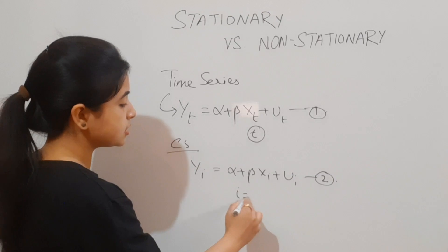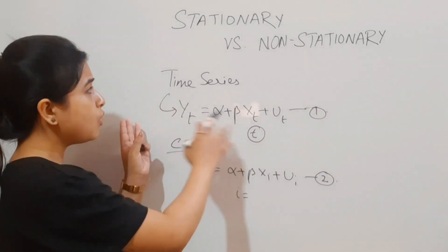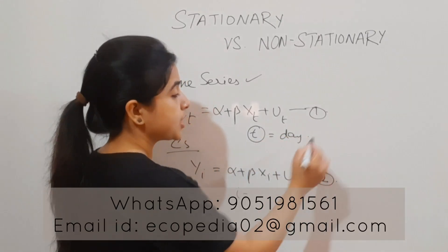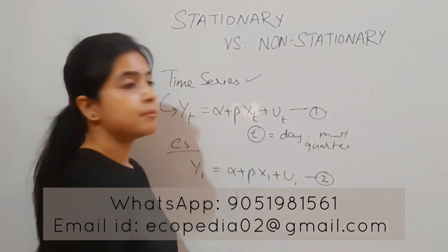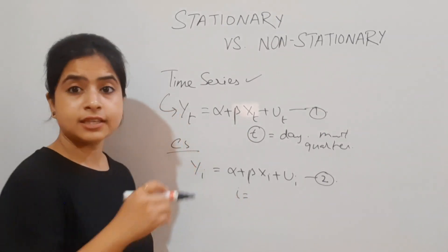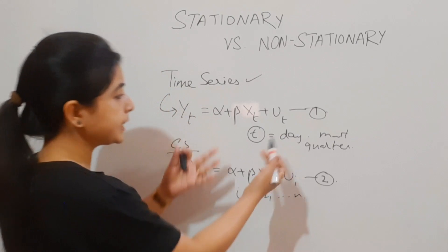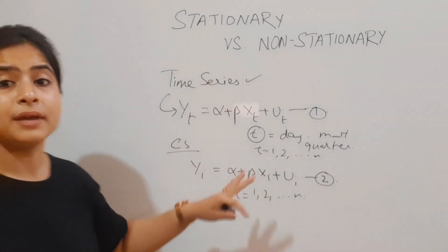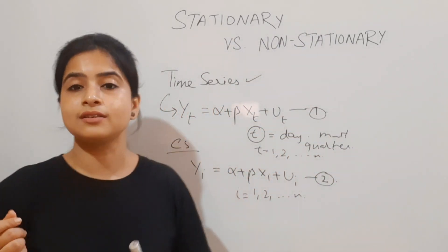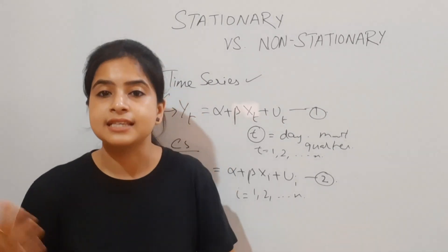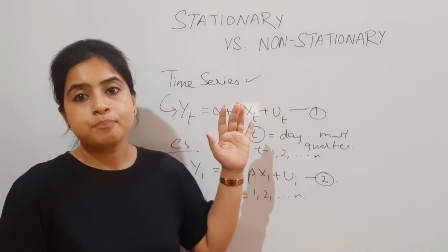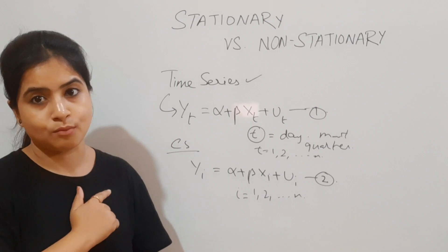The major difference is that in the time series model, variables vary across time periods t, whereas in cross-section data they vary across different cross-sectional units. The time variable can be of various types — daily, monthly, quarterly, annual, biannual — while cross-section units vary from 1 to n, and t also varies from 1 to n. The properties and characteristics of the data differ significantly between these two model types.